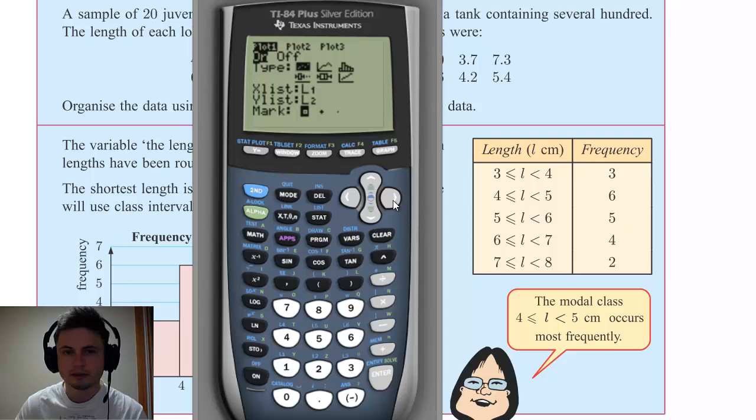So this right here was the one we used before, this was the scatter plot data that we used before. Now we're not looking at scatter plots here, we're actually looking at histograms. The icon for histogram is right here, it's the third one. You click on it, click enter.